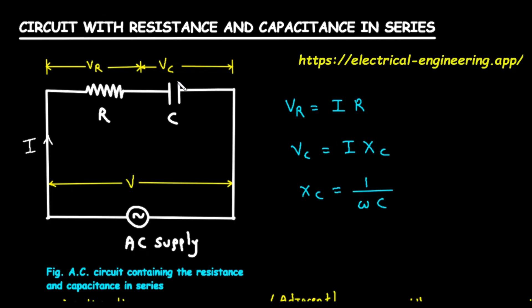Now, let's look at the basic relationships for voltage in this circuit. For the resistor, the voltage across it, VR, is determined by Ohm's law. This is simply the current I multiplied by the resistance R. So VR equals I times R. In a resistor, the voltage and the current are perfectly synchronized. We say they are in phase.